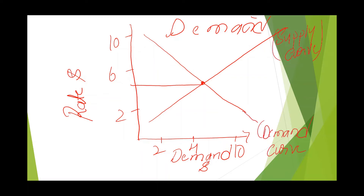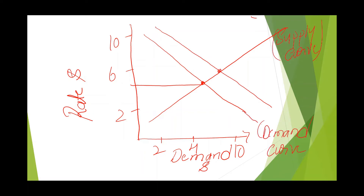Let us see what will happen if demand increases. If demand increases, the new demand curve will be above the original demand curve, and the new equilibrium point and new price will be higher. As per the law of demand, whenever there is an increase in price, the quantity demanded comes down. So the quantity demanded will come down to the original equilibrium point. This is how equilibrium will be achieved again whenever there is an increase in demand.